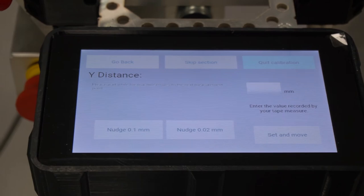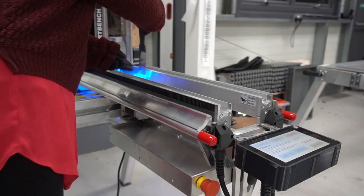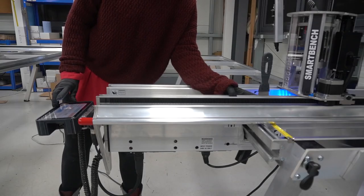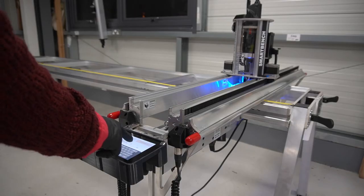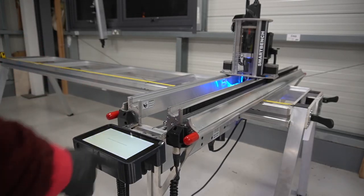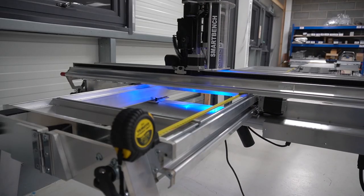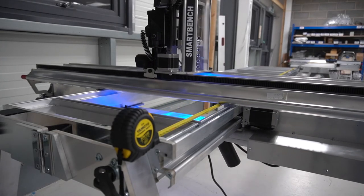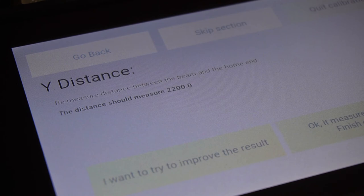Move to the next section and take a measurement as before, using the nudge buttons to ensure you are precisely up to a millimeter line. When you press set and move, the x-beam will travel away from y home.